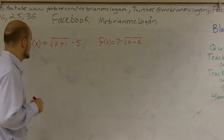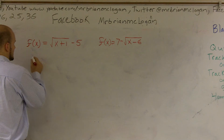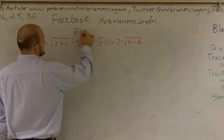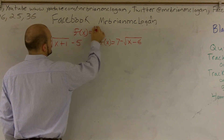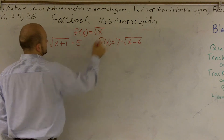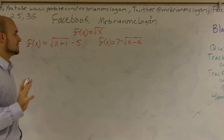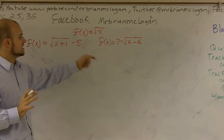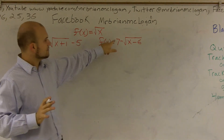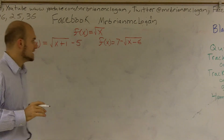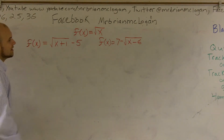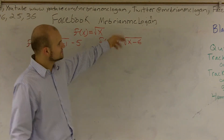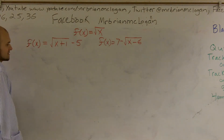The first thing we can look at is the parent graph for this function, which is f of x equals the square root of x. That's our most basic function. Then what happens is we add in values — here we're adding a 1 and subtracting a 5, and over here we're adding a 7, putting a negative in front, and subtracting a 6.